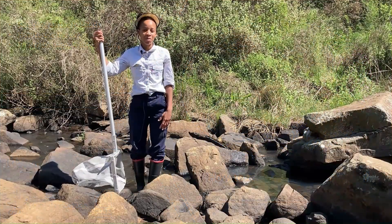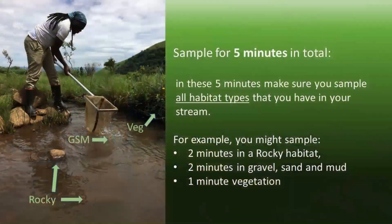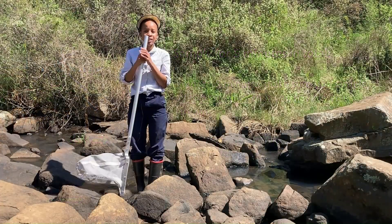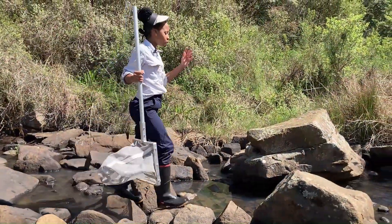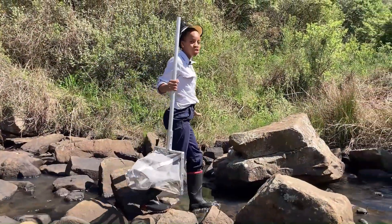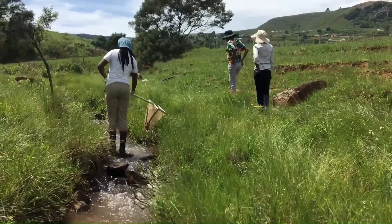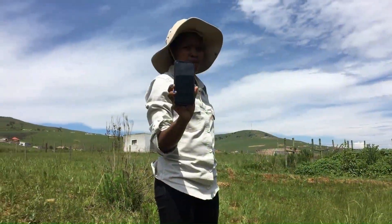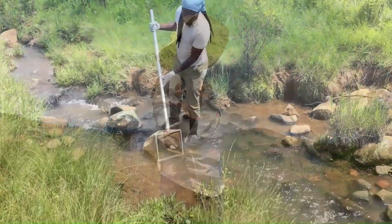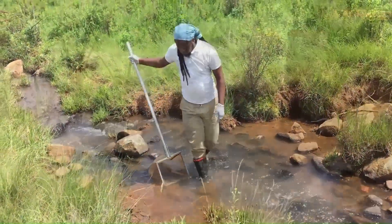Let's take a mini SAS sample. You're going to sample for five minutes and make sure that you sample all the different habitat types that you can find. Make sure that you walk upstream as you work. You can get someone to time you. Place your nets so that the water is flowing through it.